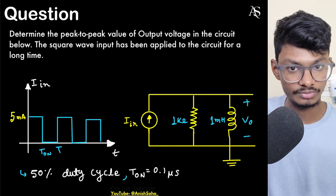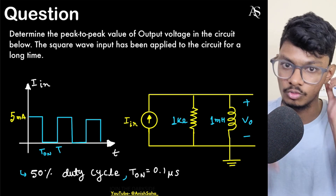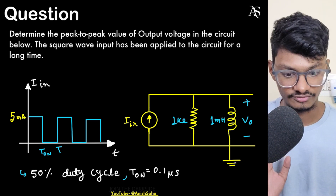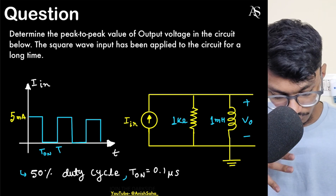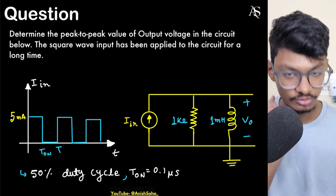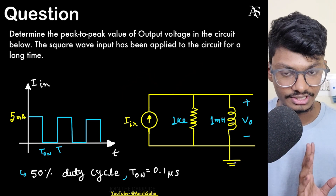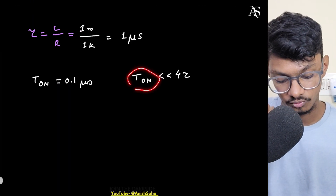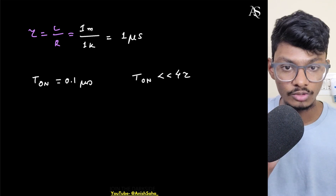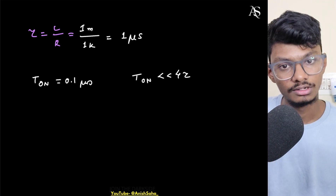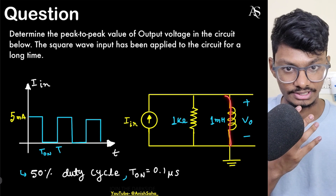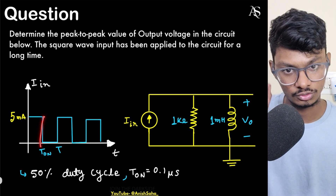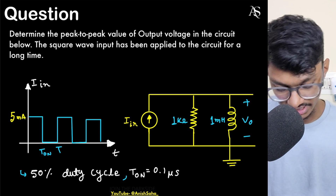Please watch my pulse response marathon video where I've explained everything about pulse responses of RL and RC circuits. What will happen here is that the voltage will oscillate around a certain value. Obviously it will eventually reach steady state, but the voltage will oscillate. If T_on were much greater than 4 tau, the circuit would have reached steady state before the waveform goes to zero.